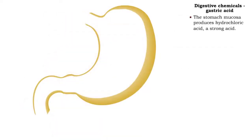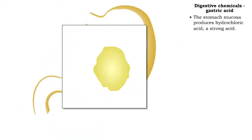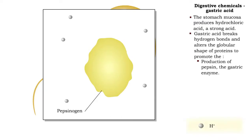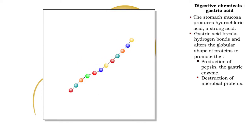The stomach produces hydrochloric acid. The gastric acid aids in the digestion of proteins by breaking hydrogen bonds and destroying the protein's globular shape.